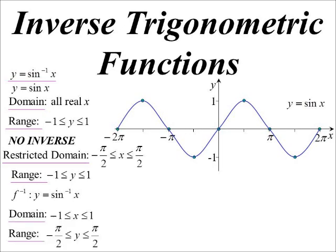Its domain will be the old range, and its range will be the old, or the restricted domain. Now this explains why when you go to your calculator, it'll only give you answers between minus 90 and 90, because your calculator works with functions.